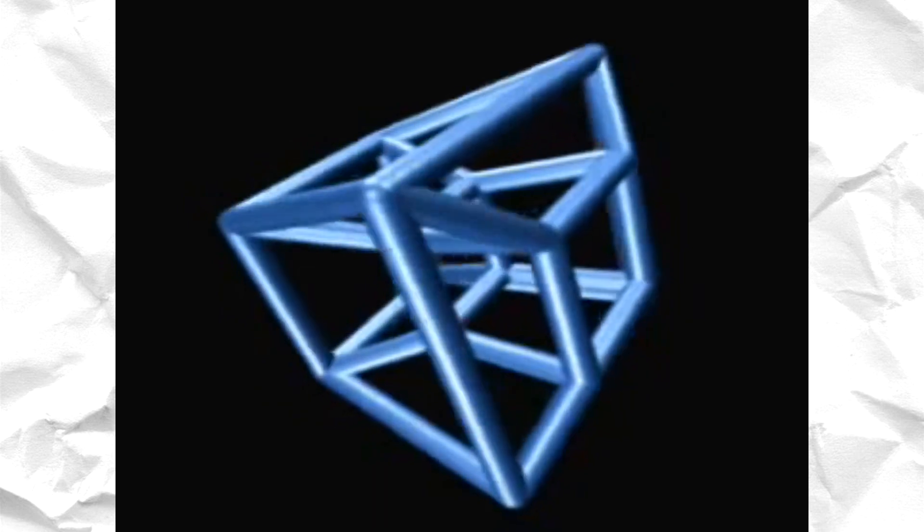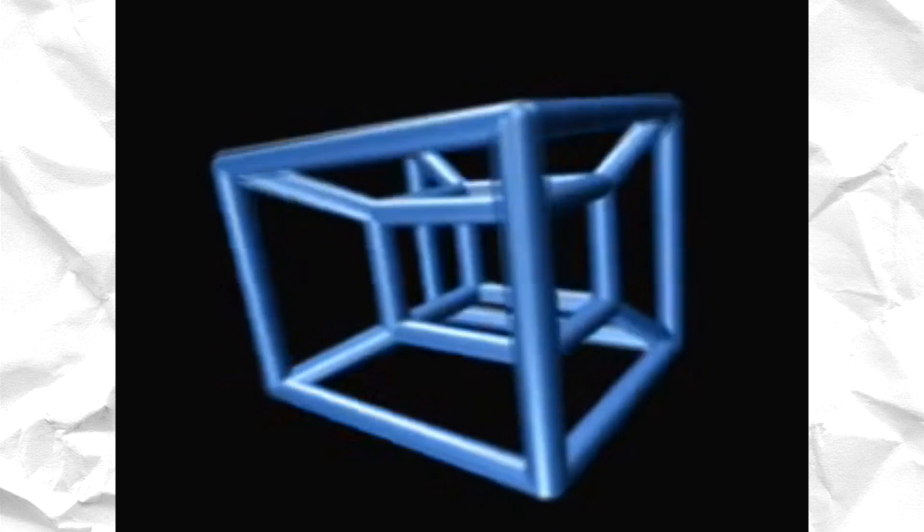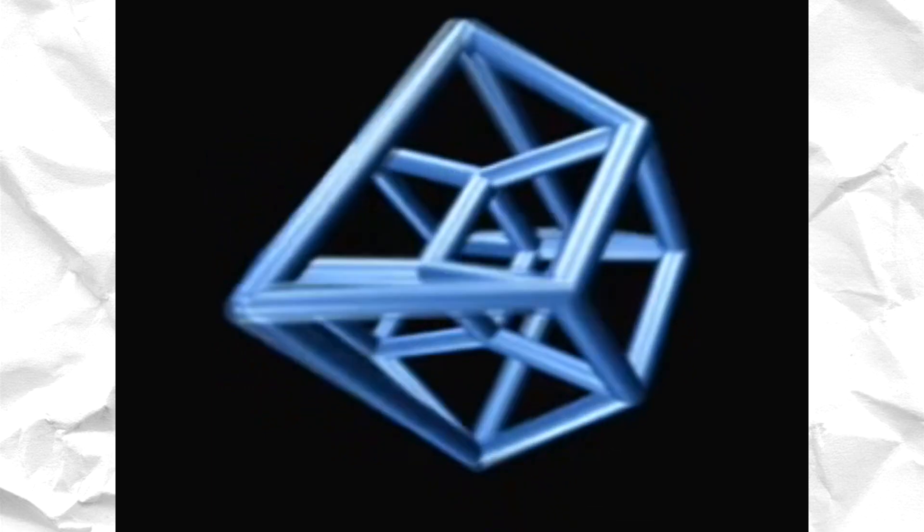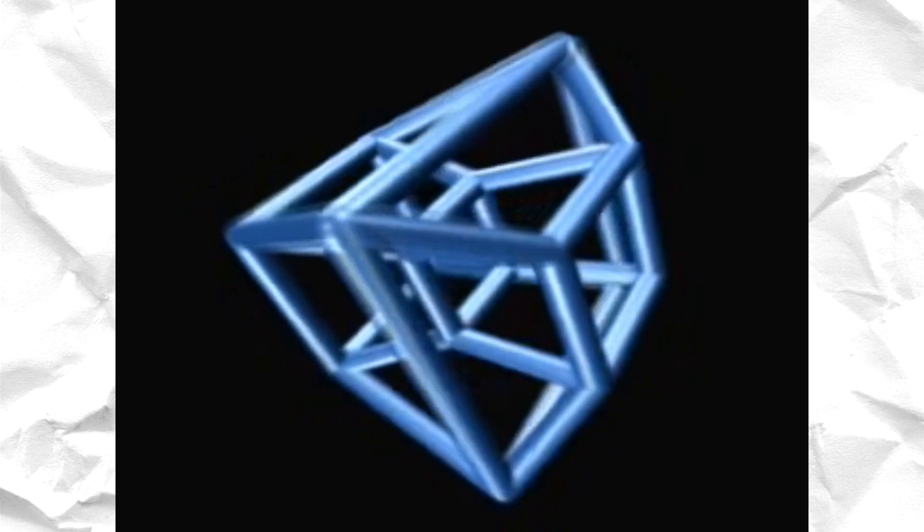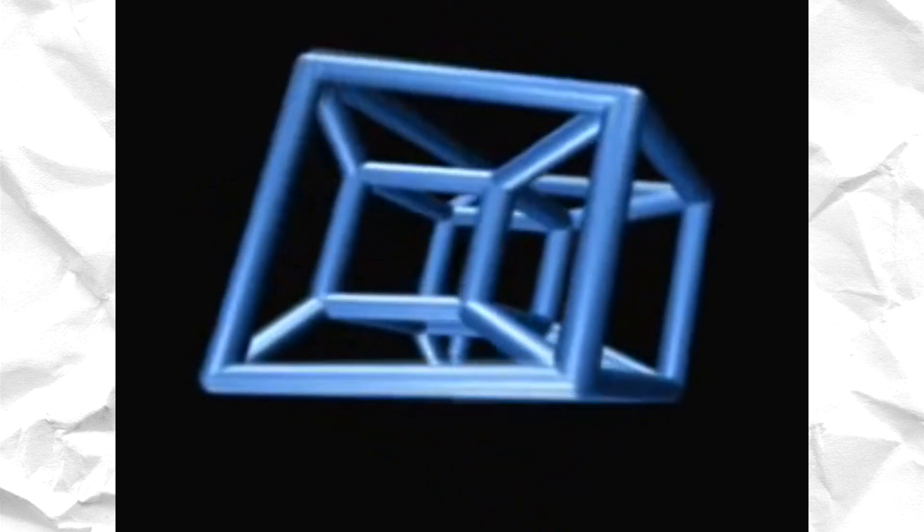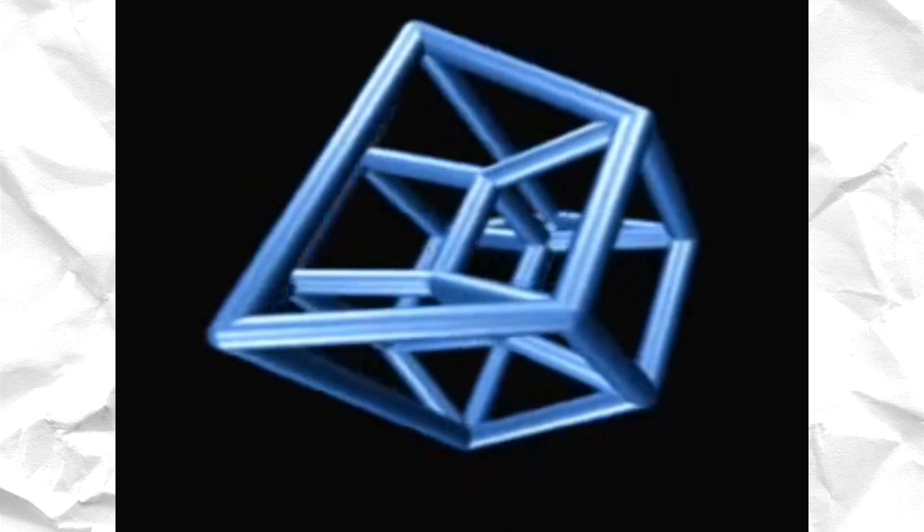But we can actually go higher to the second dimension where the next dimension that we add is another line. So essentially we double the 1D to get a 2D and this creates a square that has length and width. So now we have two dimensions. But hold on to your pants, boys, because we're about to go to the third dimension.